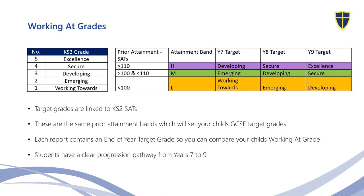In our Key Stage 3 assessment system, students are graded from 'working towards' to 'excellence', and these grade descriptors are linked to your child's prior attainment. When every Year 7 cohort enters, students have to be flight-pathed by the Department for Education from their attainment at Key Stage 2 through to their outcomes at the end of Key Stage 4. Target grades are generated based on whether students are in lower, mid, or higher prior attainment bands, and we use this information to generate an approximate target grade to track progress across Key Stage 3 and onto Key Stage 4.